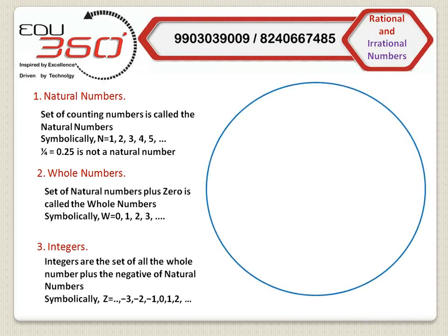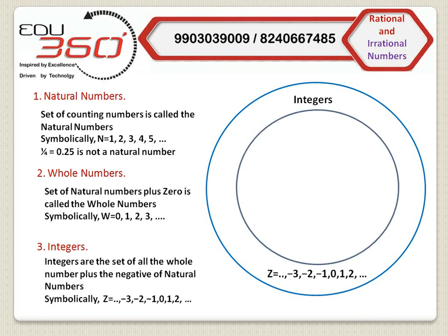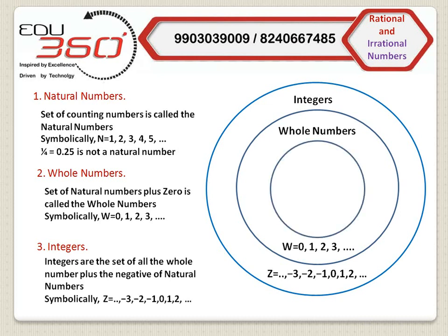First, consider the set of integers denoted by Z, starting from minus infinity to plus infinity. Now consider the set of whole numbers. If we exclude all negative integers from Z, we will get the set of whole numbers, starting from 0 to plus infinity. Now, if we exclude 0 from the set of whole numbers, we will get the set of natural numbers, starting from 1 to plus infinity. Please note that we have not included fractions or decimal points in any of these number categories — whether natural numbers, whole numbers, or integers.